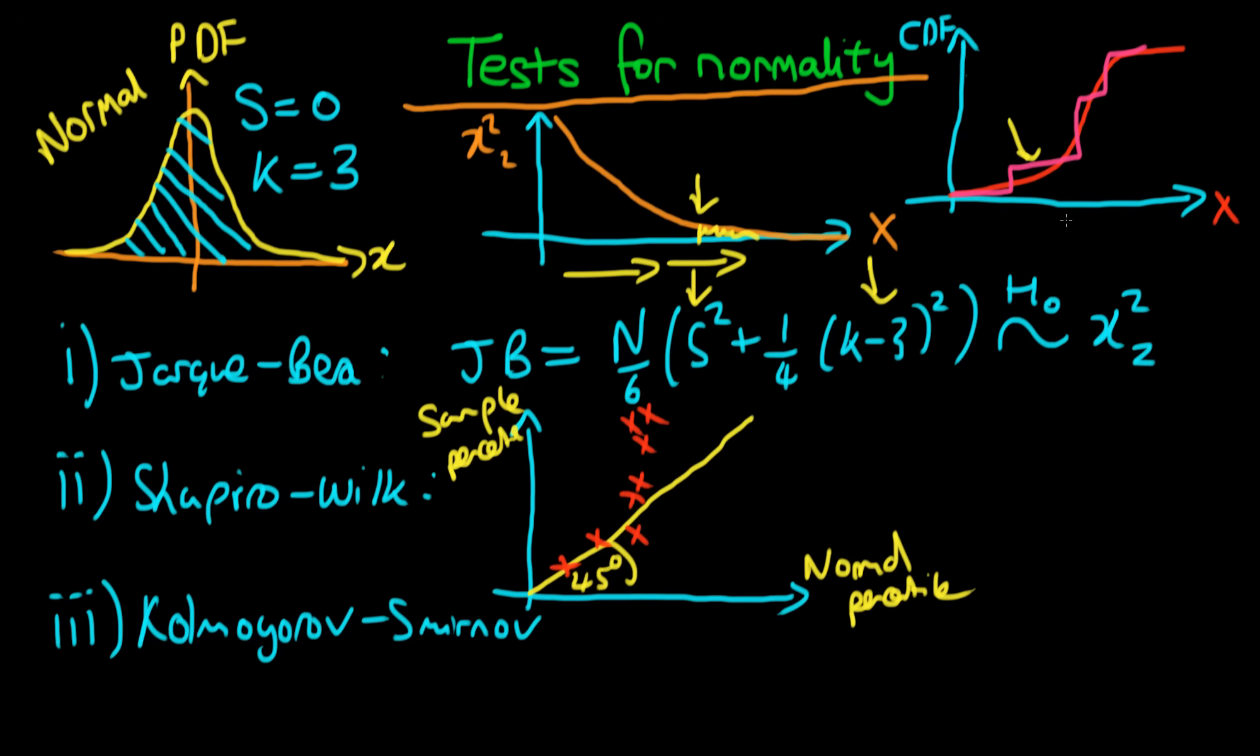Whereas if we got a sample CDF which looks perhaps something like this, then the distance between these two data sets is quite large, or these two distributions rather. So then we would reject the null hypothesis in this particular example.